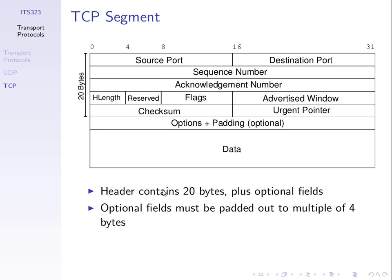This is our TCP segment. TCP packets are called segments, and there's only one type. There's no different type of segment for an ACK — we just have one type of segment.